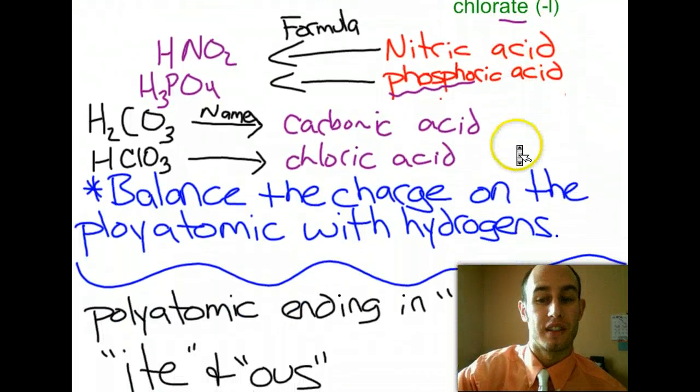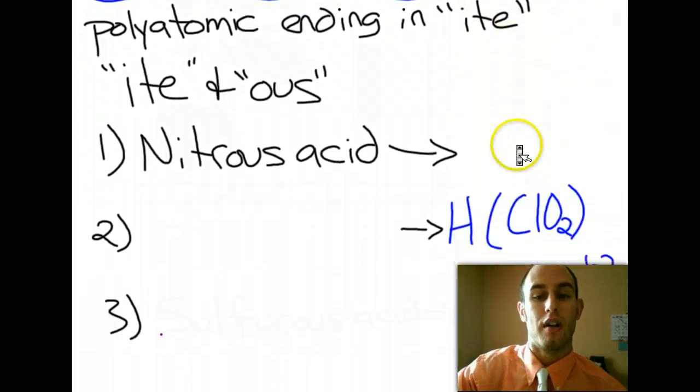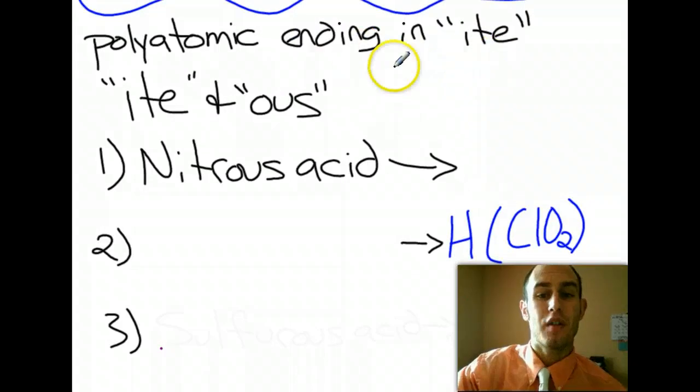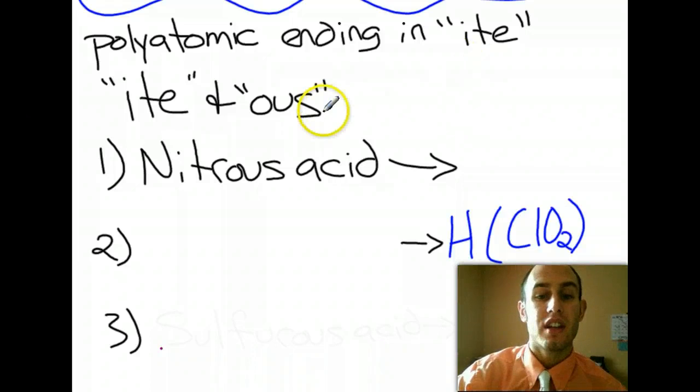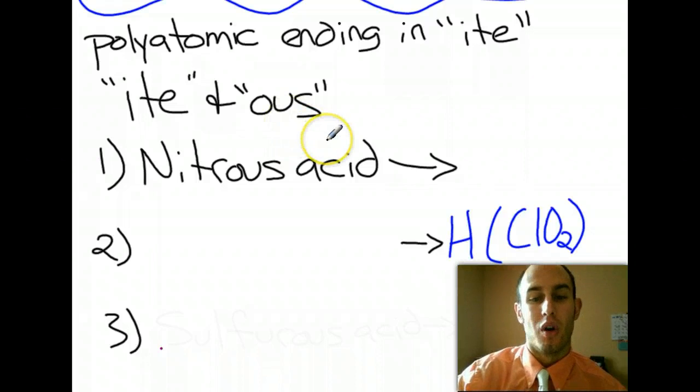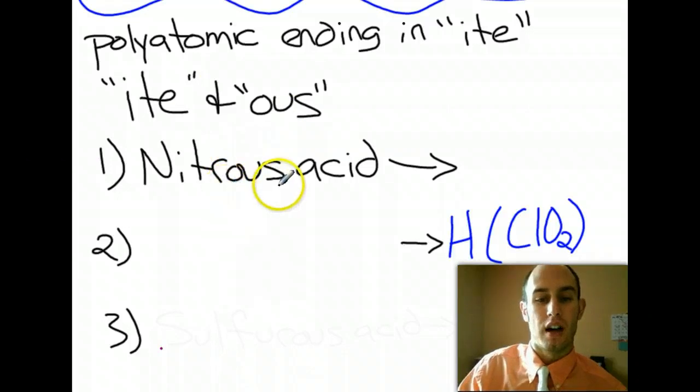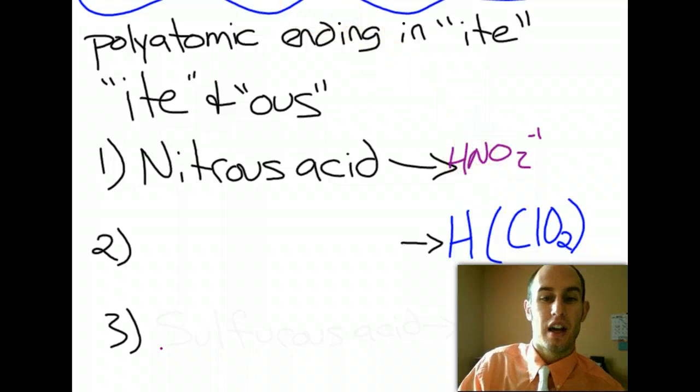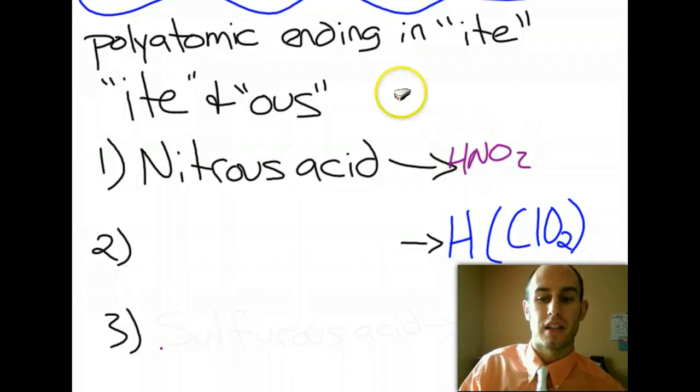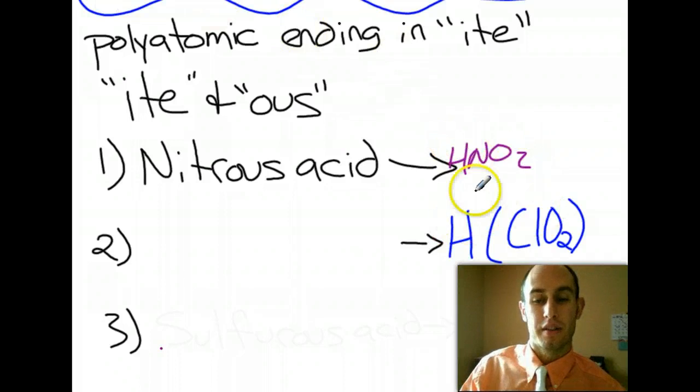What happens when we have the -ous ones, like nitrous acid? Well, if you have a polyatomic that ends in I-T-E, nitrite, chlorite, these go together with -ous. -ite and -ous go together. So, nitrous acid here, I know I'm ending with -ous. That means that typically its root is going to be nitrite, and you need to know nitrite is NO2, which is still a negative 1 charge for nitrite. I'm going to balance its charge with an H, so it becomes HNO2. The charge disappears because I balanced it with that number of hydrogens.